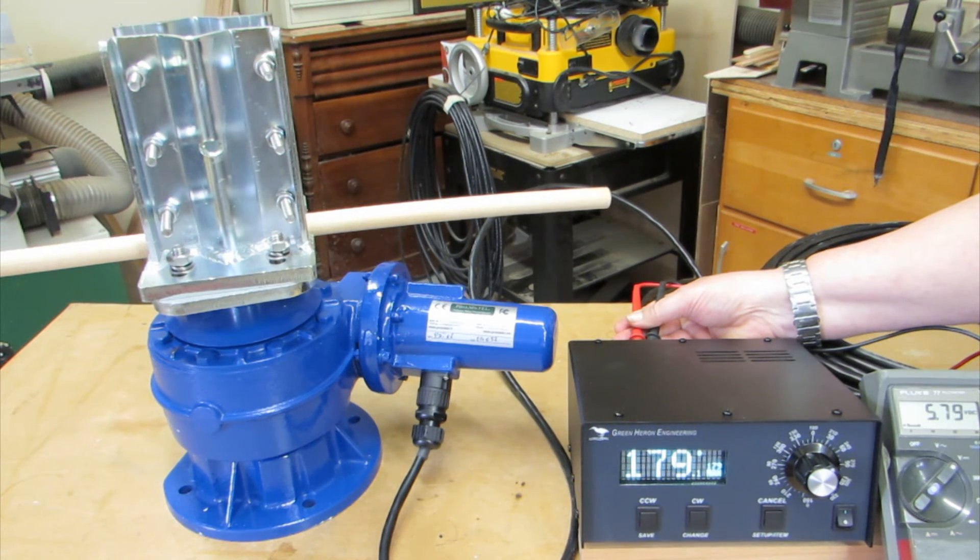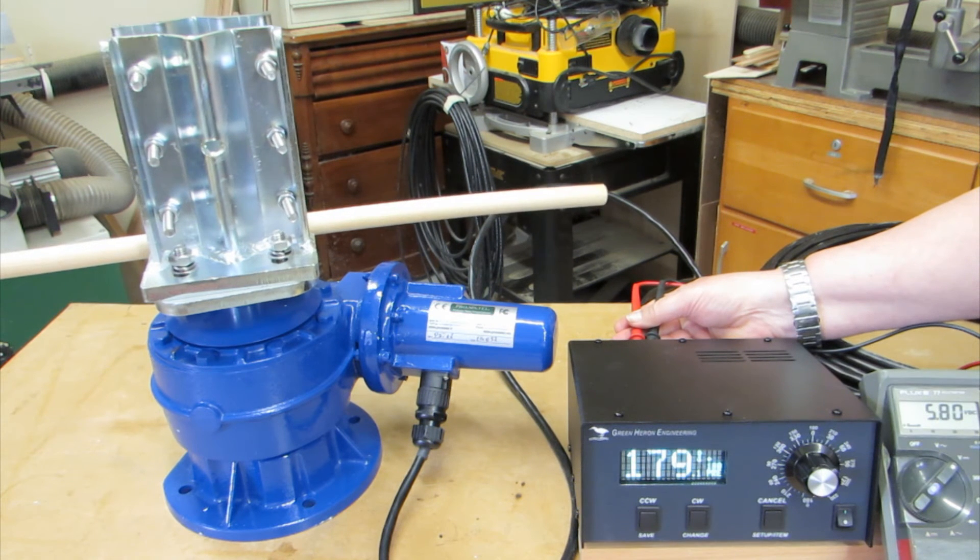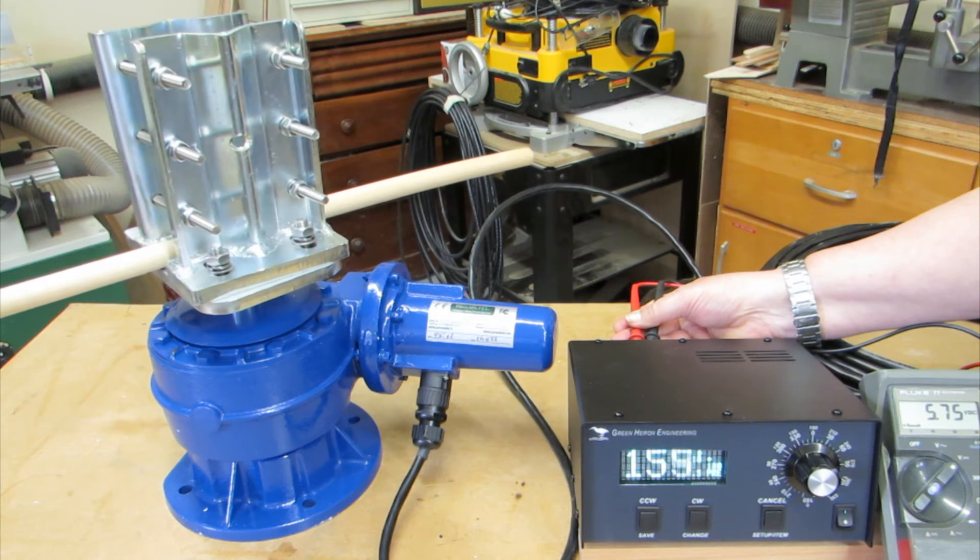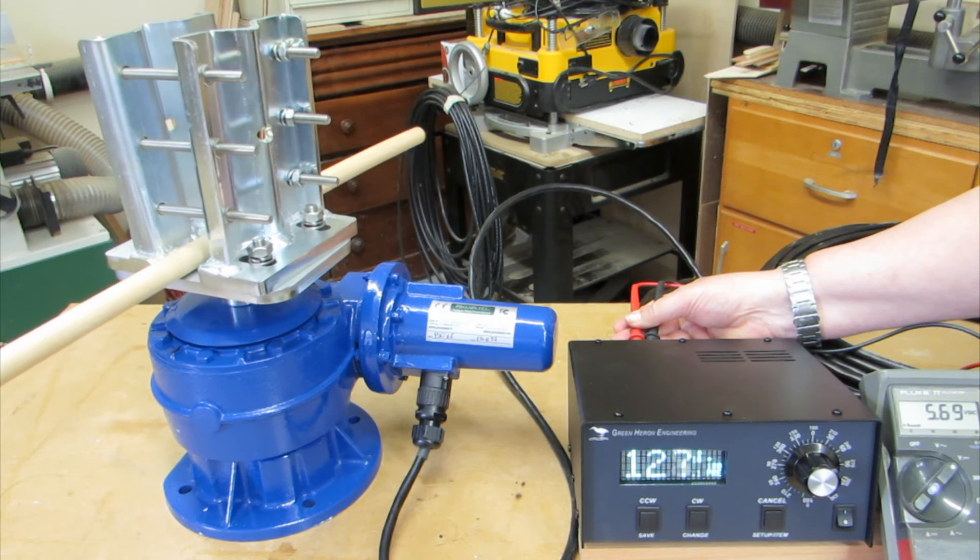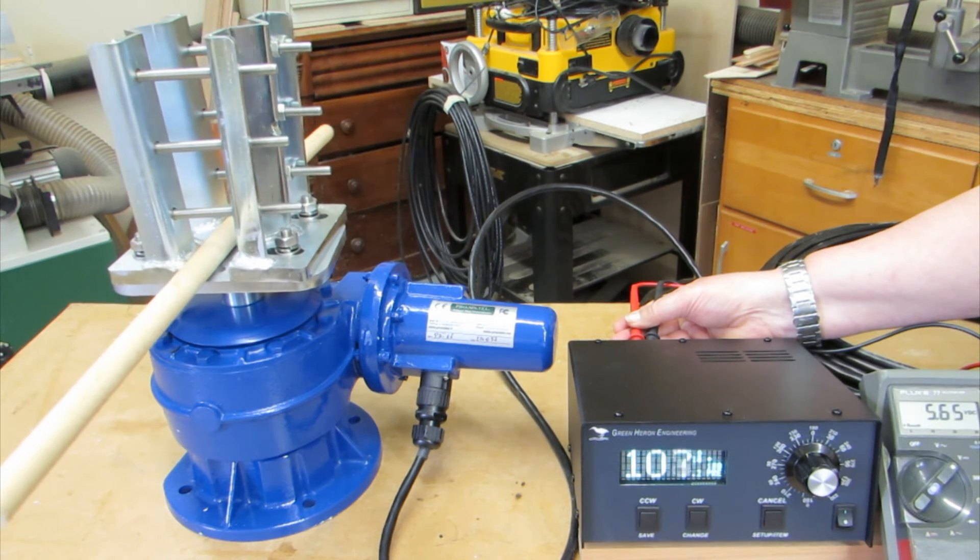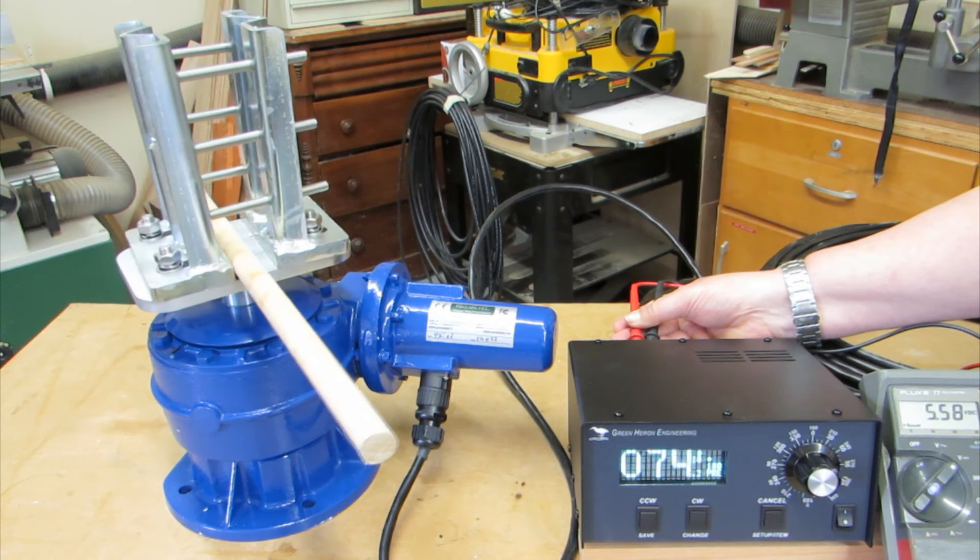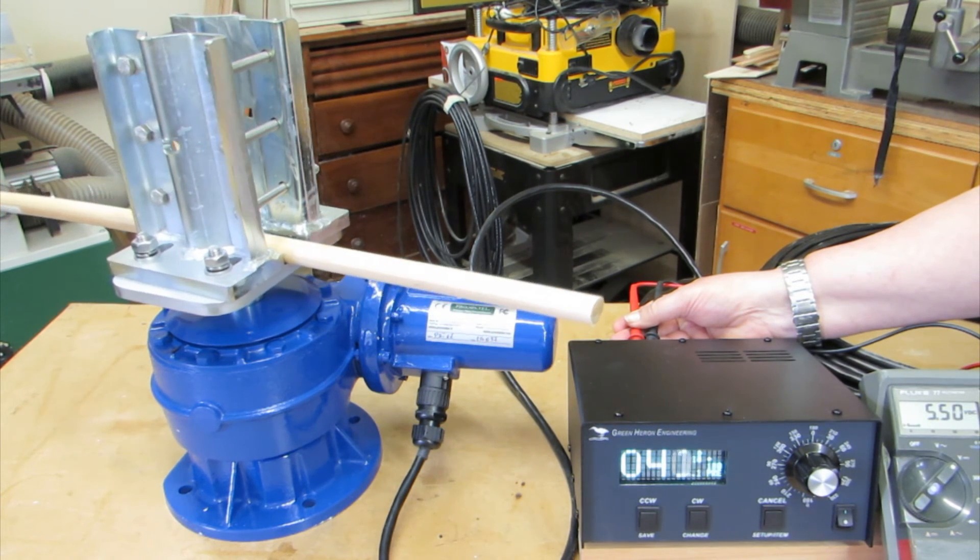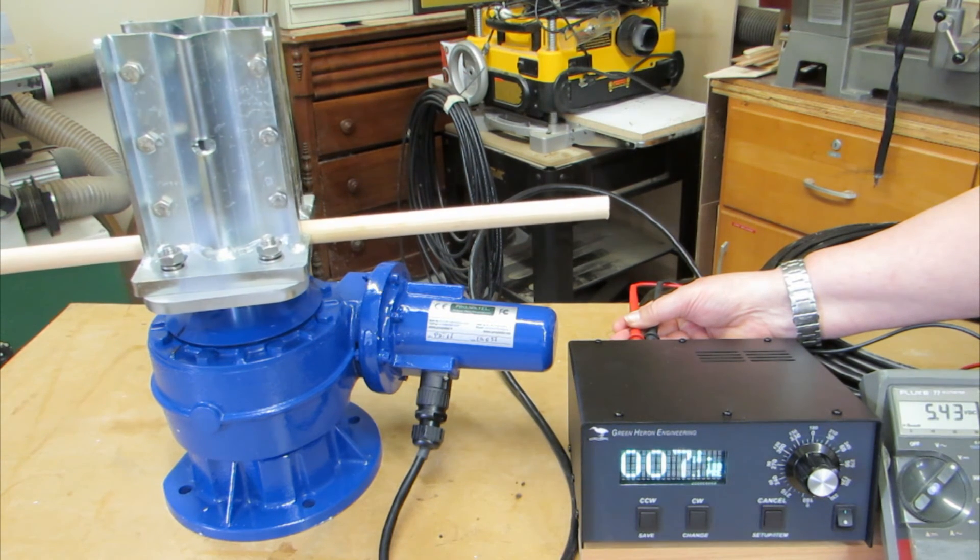Now I'll rotate to the full counterclockwise position, where it should read 5.02 volts. You'll notice this controller ramps the rotor speed through several steps as it goes from rest to full speed, and also as it slows down. This is to reduce the torque stress on the tower, the antenna, and the rotor. The number of steps is adjustable.